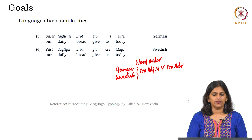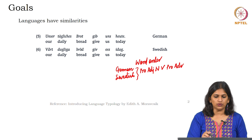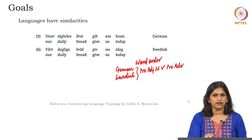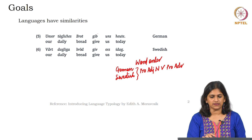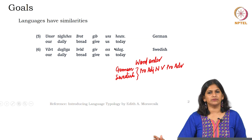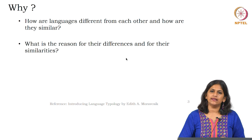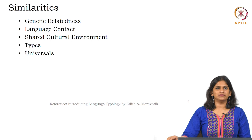Besides word order similarity, there is also considerable lexical and phonological — or phonetic — similarity between German and Swedish. For the verbs, for instance, the sounds are very similar; 'bread' and 'broad' are very similar; 'uns' and 'os' show some similarity. So not only do German and Swedish share word order, they also share lexical and phonetic features.